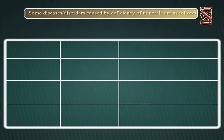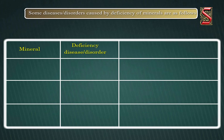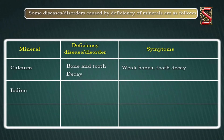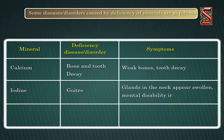Some diseases or disorders caused by deficiency of minerals are as follows: Calcium deficiency causes weak bones and tooth decay. Iodine deficiency causes Goiter, where glands in the neck appear swollen, and can cause mental disability in children. Iron deficiency causes Anemia, with symptoms of weakness.